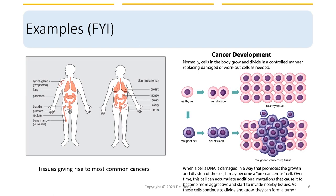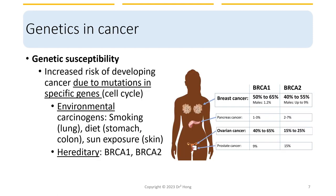Cancer development can happen in any given tissue in the body, but some tissues are more prone, such as the lung, breast, prostate, and colon. Some causes are genetic factors, some are environmental factors, and some are a combination of the two. When we look at the genetic abnormality of cancer cells, mutations can be found in genes that regulate the cell cycle. These mutations can be caused by environmental factors such as smoking, diet, and certain exposures.